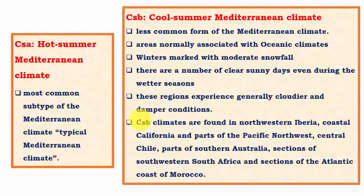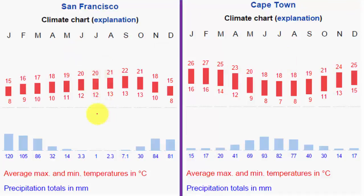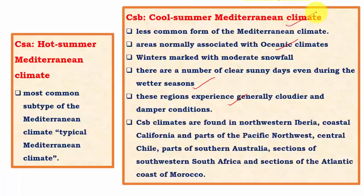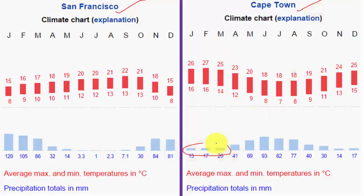There is a local variation called CSB — cool summer Mediterranean climate — confined to very few regions like northwestern Iberia (part of Spain), coastal California, and parts of central Chile. These are transitions between Mediterranean climate and surrounding climates, with comparatively better rainfall and very significant oceanic influence. Looking at climatic graphs, San Francisco (northern hemisphere) and Cape Town (southern hemisphere) both have Mediterranean type climate. Cape Town represents the cool summer Mediterranean type with no very distinct dry season due to oceanic influence.